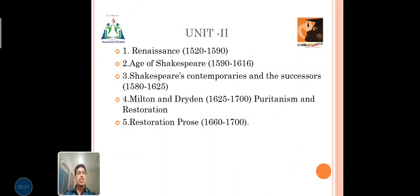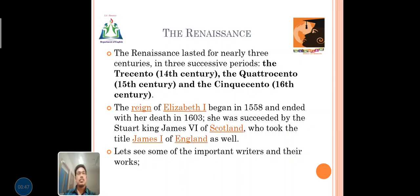Unit 2 consists of five major topics: the Renaissance, the Age of Shakespeare, Shakespeare's contemporaries and his successors, and writers of his age, and Milton and Dryden. The next topic is the Restoration Prose. Let's enter into the topic.